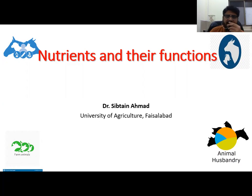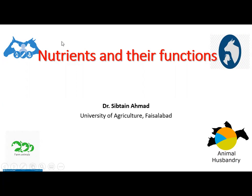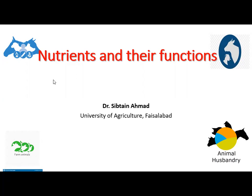If we classify these nutrients, we can classify them in different categories — for example, primary nutrients and secondary nutrients. Primary nutrients are those required in larger amounts for performing different functions of the body, and secondary nutrients are those required by the body in very minute or very small quantities. Primary nutrients include water, carbohydrates, proteins and lipids, whereas secondary nutrients include minerals and vitamins.